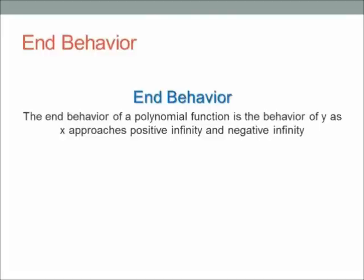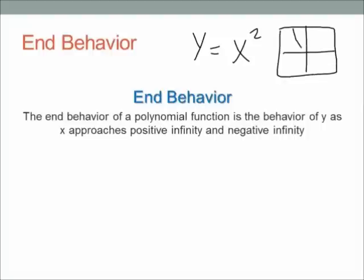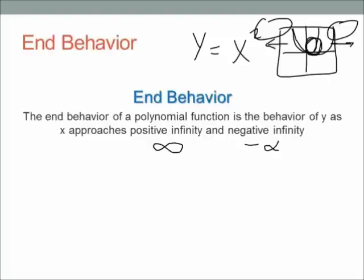So let's say you graph y equals x squared. It doesn't matter what's happening on the graph that you put on the calculator — what you see there is the middle of the graph. The ends of the graph are way over to the left and right; you can't go far enough to get to the end. The graph could be doing curlicues in the middle — it doesn't matter. It's what's happening on the ends. The end behavior of a polynomial function is the behavior of y as x approaches positive infinity and negative infinity.